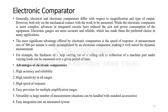We have seen the different types of comparators, like mechanical comparators. In that, we have seen the dial gauge or dial indicator. Then we discussed what are the disadvantages and advantages of the mechanical comparators.